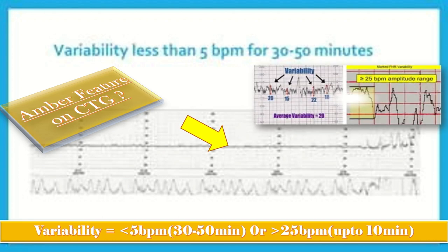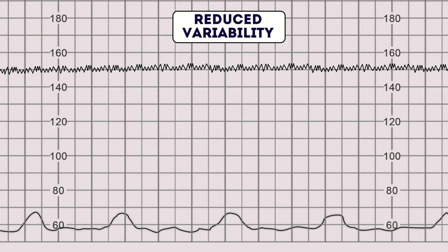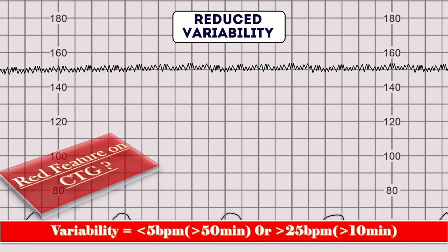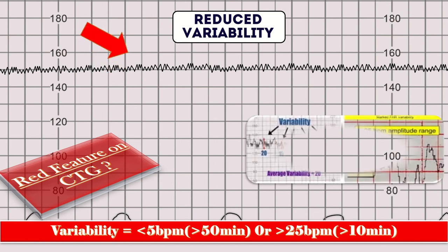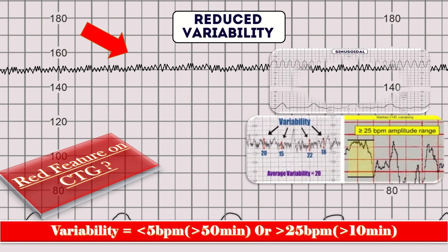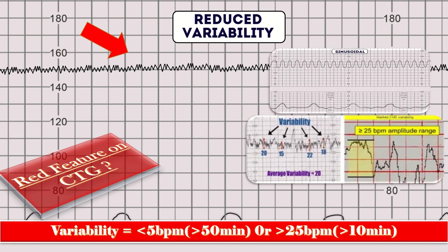When the variability is less than 5 beats per minute for more than 50 minutes, or more than 25 beats per minute for more than 10 minutes, or we have a sinusoidal pattern, that is included among the red features of CTG.